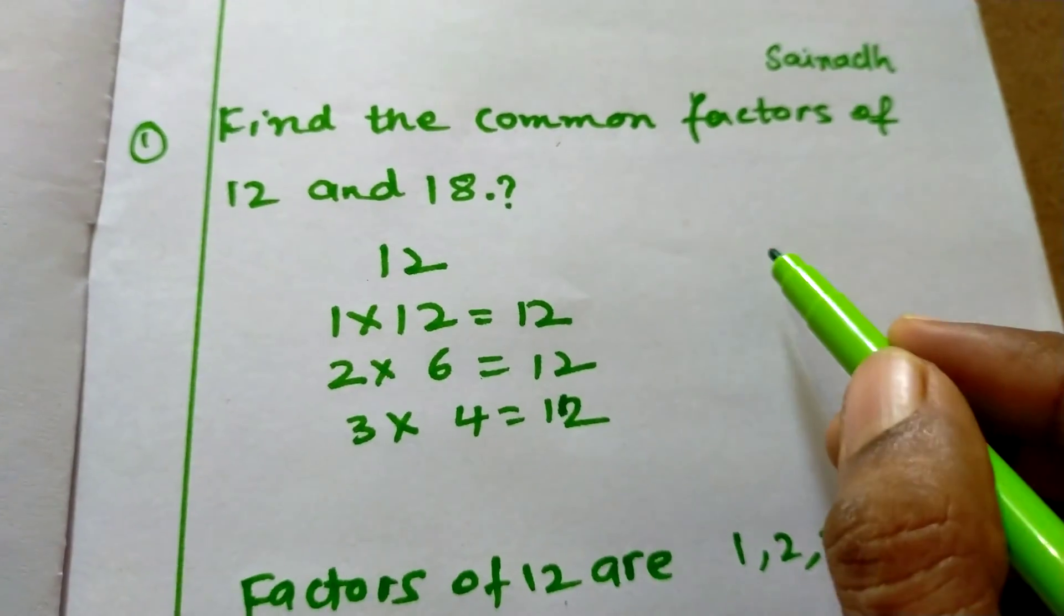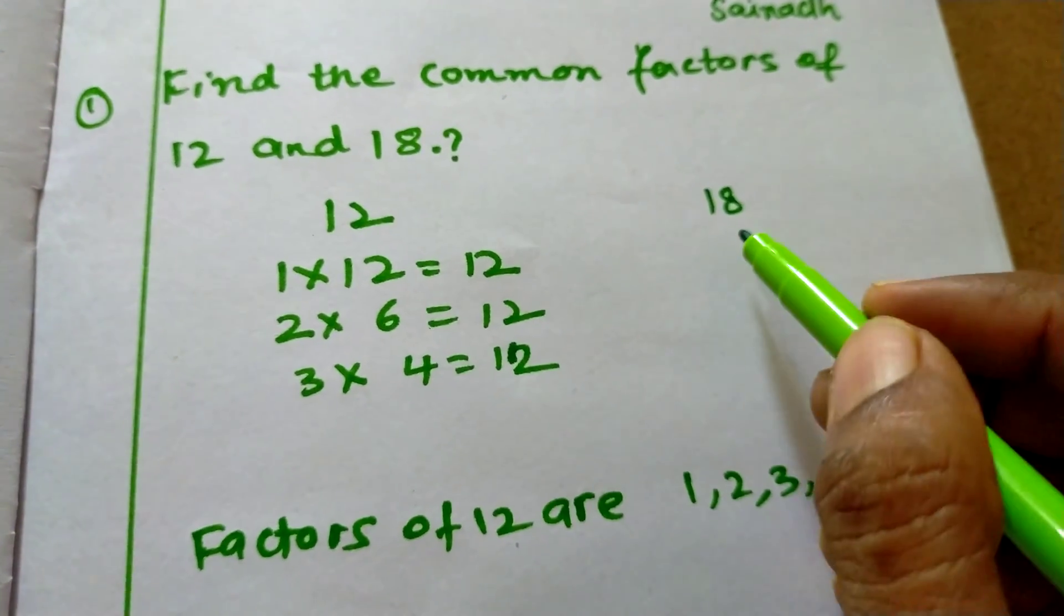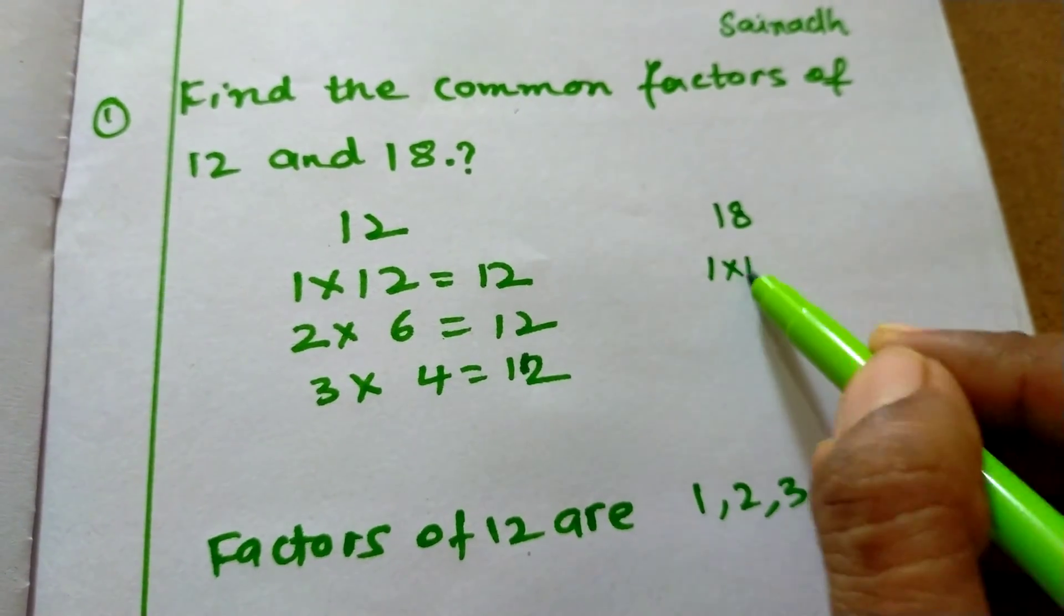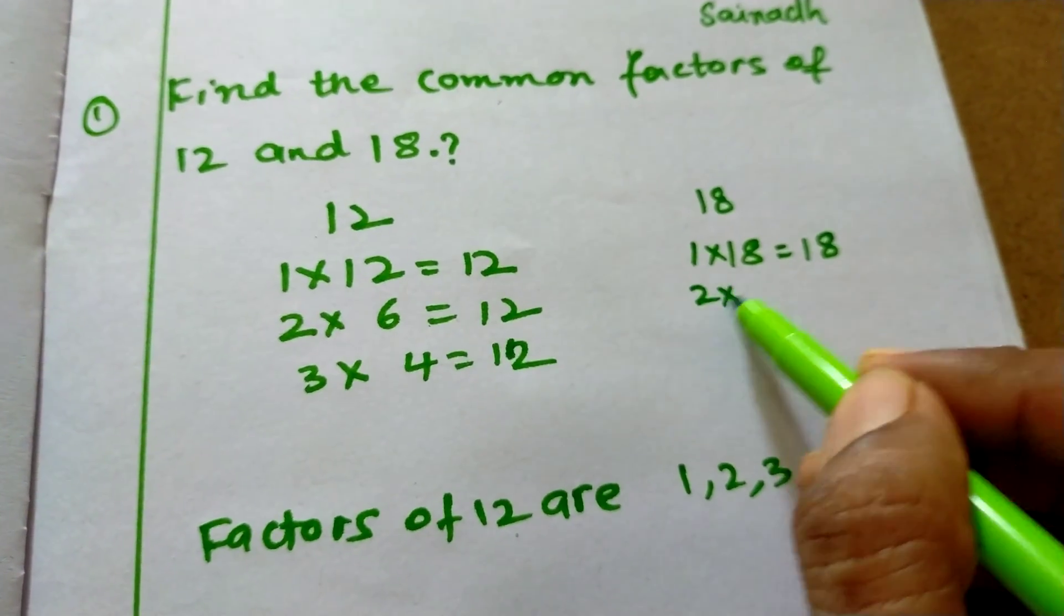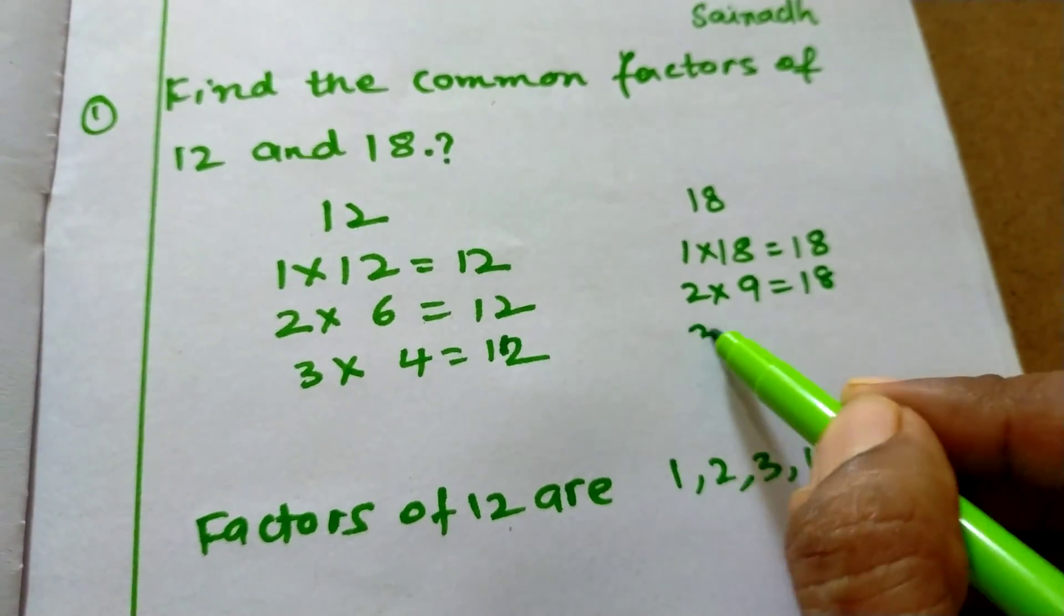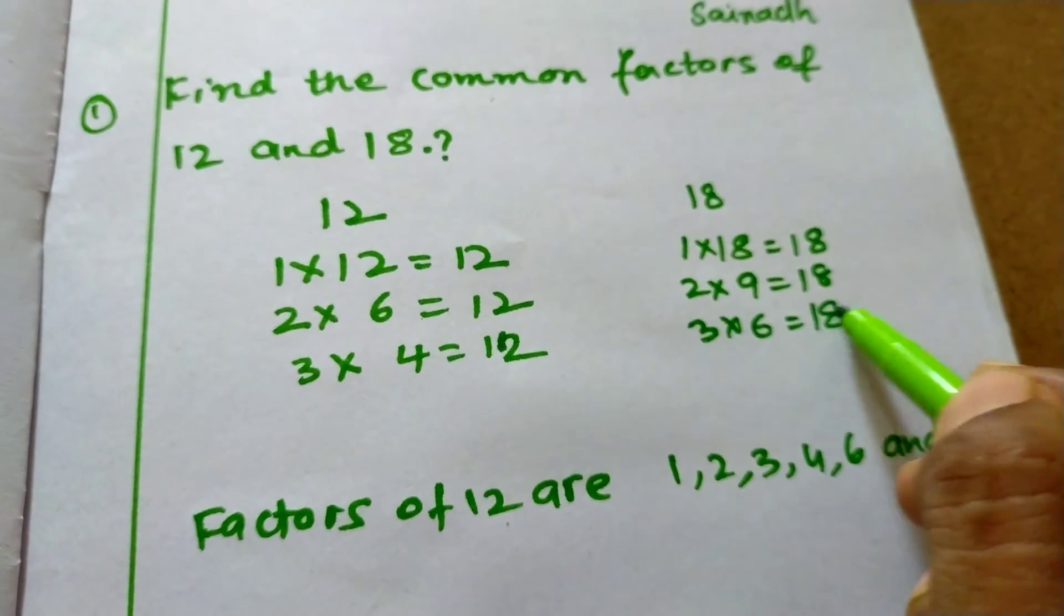Next, the number is 18. So, 1 times 18 equals 18, 2 times 9 equals 18, 3 times 6 equals 18.